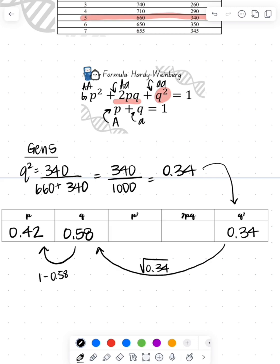We're going to square that value to get our P squared. So that's going to give us 0.18. And then we just substitute in 2 times my P times my Q. And that's going to give me my heterozygous, which is 0.4872.